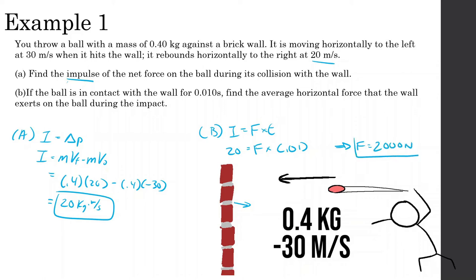To summarize: the ball hits the wall going 30 meters per second to the left, rebounds at 20 meters per second to the right. We found the impulse, and since it's in contact with the wall for 0.01 seconds, it experiences a force of 2,000 newtons during those 0.01 seconds.